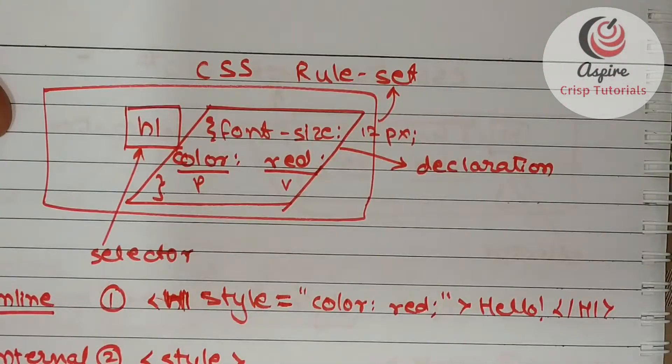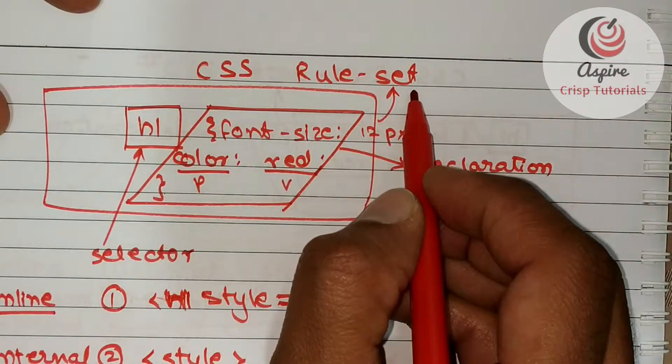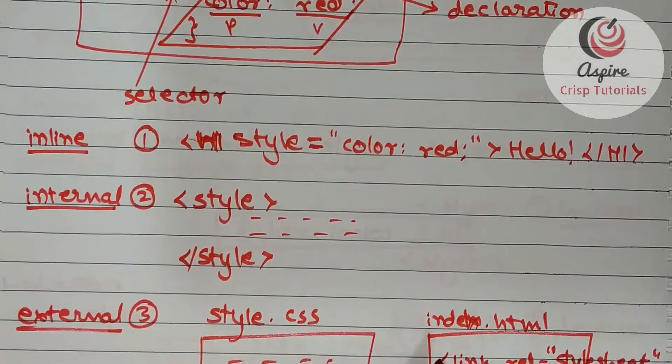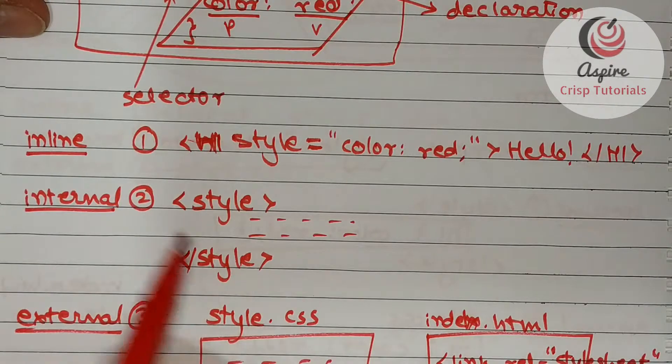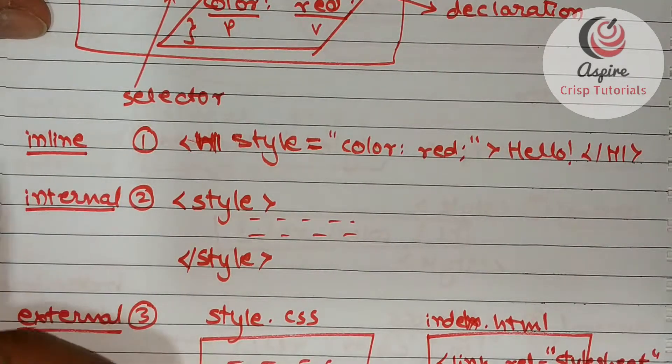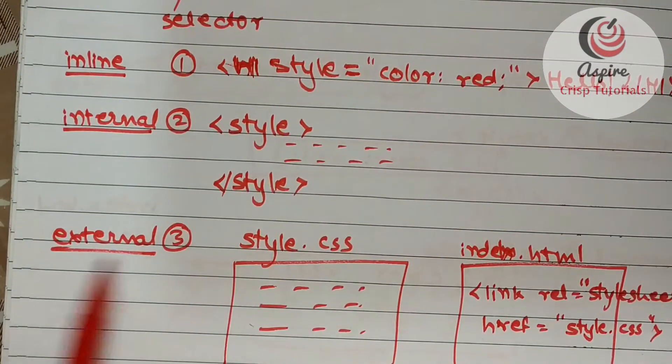So this was a short introduction of what a CSS ruleset is and of the three different ways in which you can include CSS rulesets into your HTML: either you can do it inline, internally, or externally.